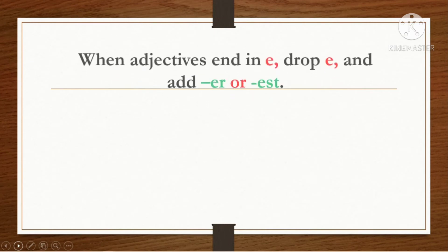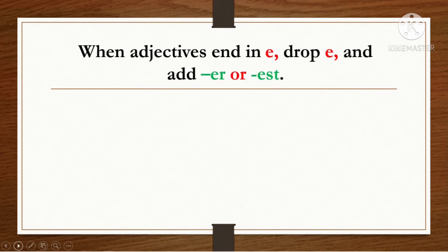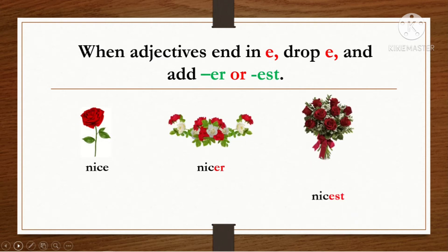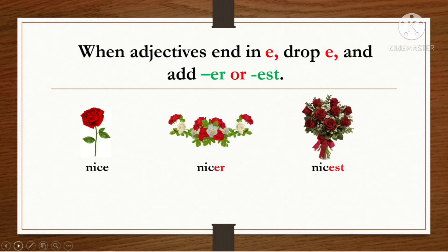When adjectives end in E, drop the E and add -er or -est. For example: nice, nicer, nicest — nice is positive degree, nicer is comparative, and nicest is superlative. Another example: wise, wiser, wisest.